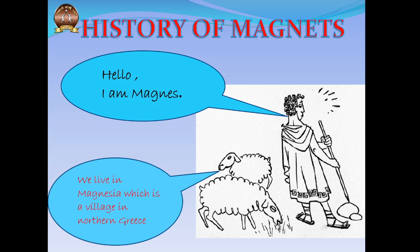Magnus was a shepherd who lived in a village called Magnesia in northern Greece. One day, while he took his sheep for grazing in an open pasture, he was carrying a rod made of metal. He noticed that it was difficult for him to pull his rod out once he placed it on certain kinds of rocks. Also, the iron nails which held his shoes together got stuck onto this kind of strange rock.